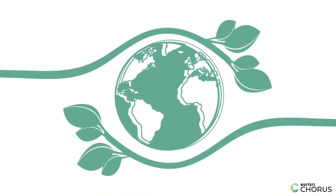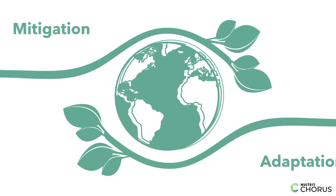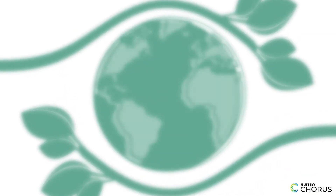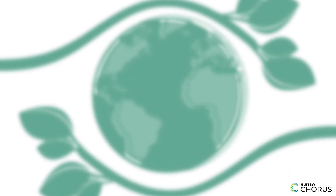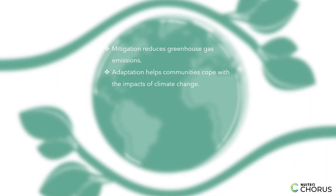Today, we've learned about the importance of climate change mitigation and adaptation. By implementing these strategies, we can work towards a more sustainable and resilient future for our planet. Let's recap: mitigation reduces greenhouse gas emissions; adaptation helps communities cope with the impacts of climate change; examples include renewable energy adoption, coastal defenses, and agricultural adaptations.